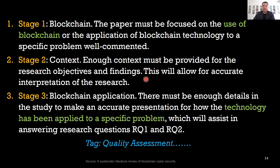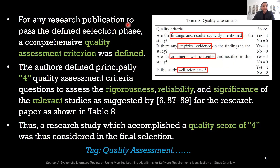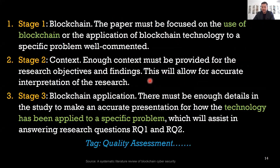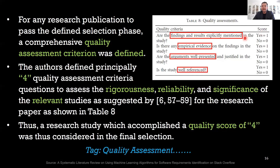That was an example from a specific paper — you would need to come up with your own quality assessment criteria to help answer your research questions. For any research publication to pass the defined selection phase, a comprehensive quality assessment criteria was defined. You can go a step further and develop an objective mechanism to decide whether a paper should be included or excluded. Once you have identified your quality criteria, put them in a table and give a score to each criterion.